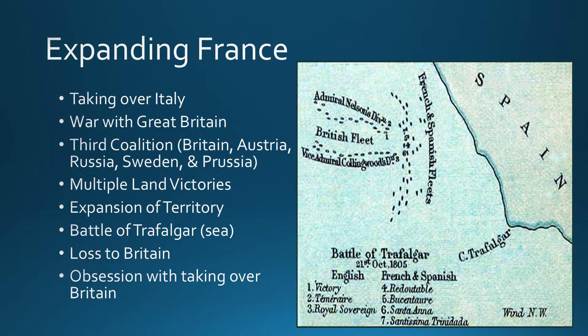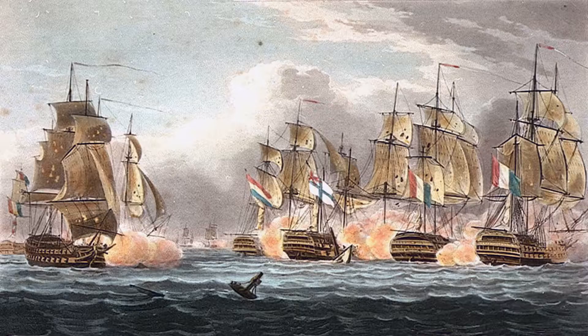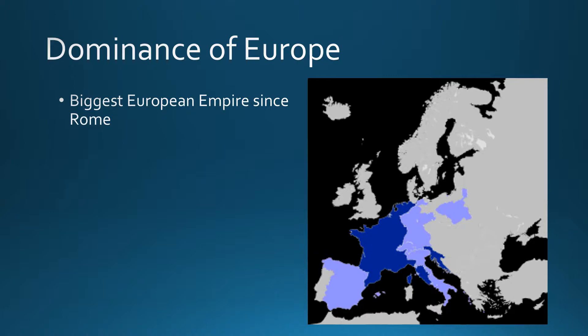In addition to becoming upset about losing to Britain, Napoleon becomes obsessed: how am I going to take over Britain? Unfortunately, that obsession is really going to be problematic. The British commander in the Battle of Trafalgar is a man named Nelson. Even though Napoleon has lost to Britain, he's basically beaten everyone else. What France establishes under Napoleon will be the biggest European empire since Rome, which has not existed as an empire for about 1600 years.